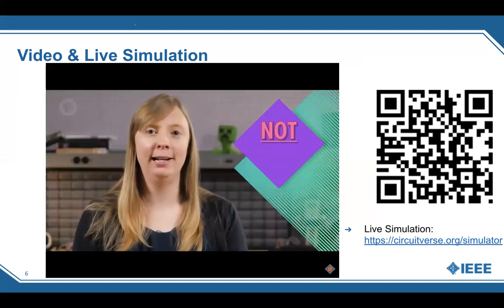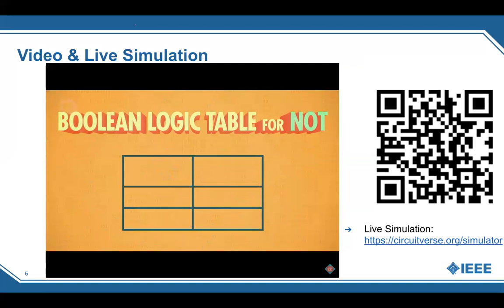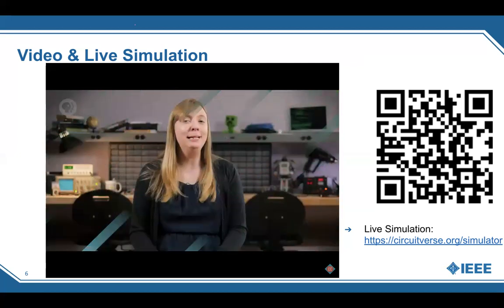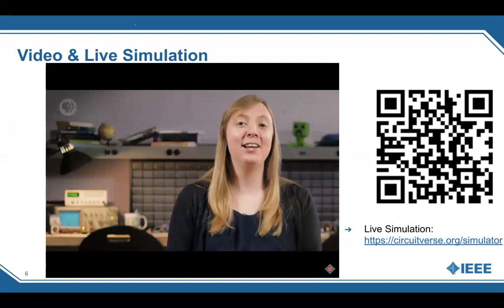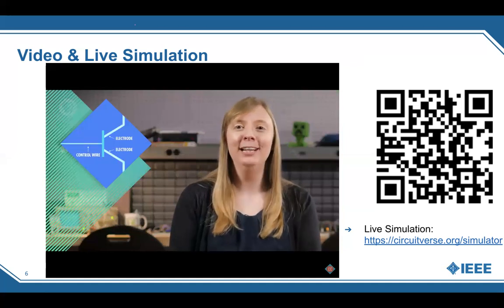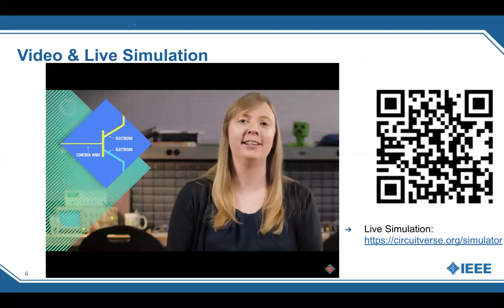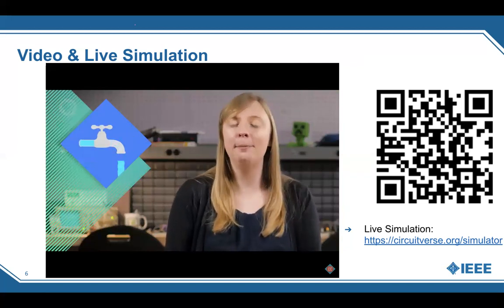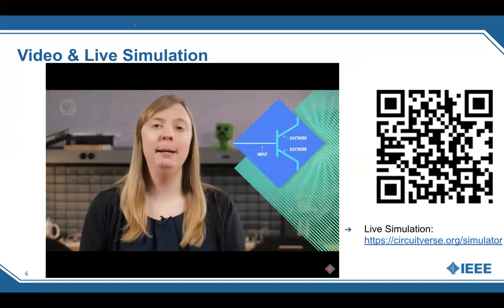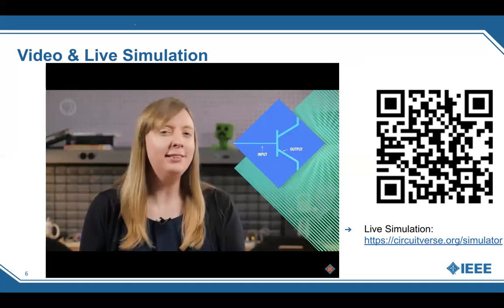Boolean algebra was developed by George Boole, a self-taught English mathematician in the 1800s. He introduced logic equations in The Mathematical Analysis of Logic in 1847. In regular algebra, the values of variables are numbers; in Boolean algebra, the values are true and false, and the operations are logical. There are three fundamental operations in Boolean algebra: NOT, AND, and OR. A NOT takes a single Boolean value and negates it — flipping true to false and false to true.